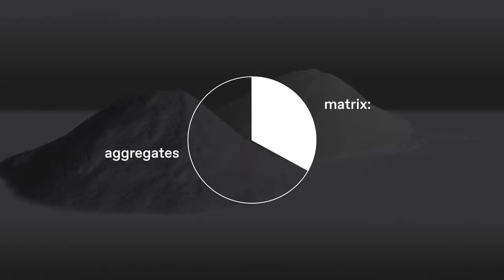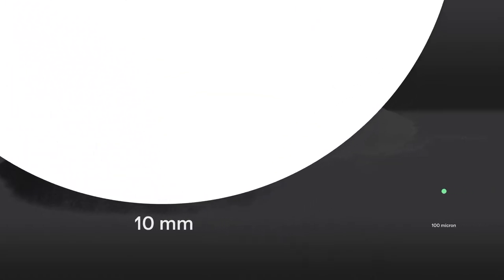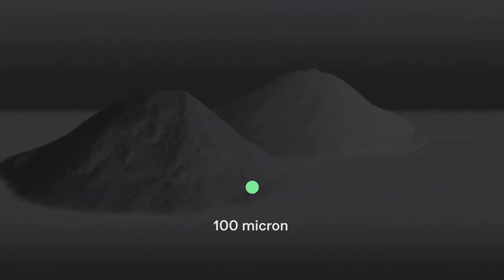A refractory castable is composed of two-thirds coarse aggregates and one-third matrix. The matrix is composed of fines and ultrafine powders as well as performance-enhancing additives. The particles in the matrix are smaller than 100 micron in diameter.